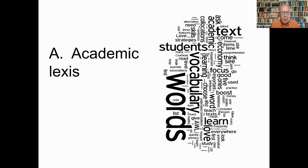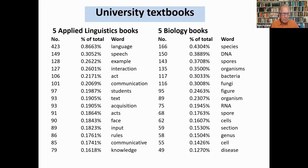Perhaps the most obvious example of specificity is lexis — that disciplines have different ways of talking about the world. They name and describe things in different ways, and this makes it very difficult to identify a common academic vocabulary. A quick study of content words from chapters in five introductory university textbooks in linguistics and biology shows that students encounter completely different items — these are different worlds, different ways of understanding and talking about things.